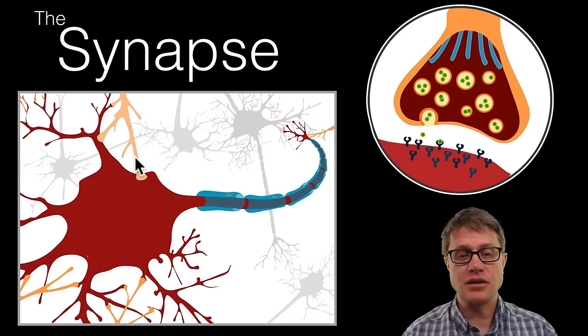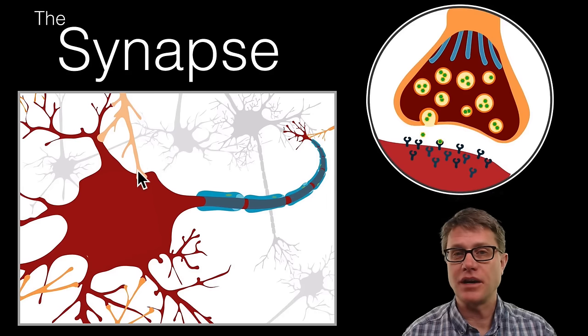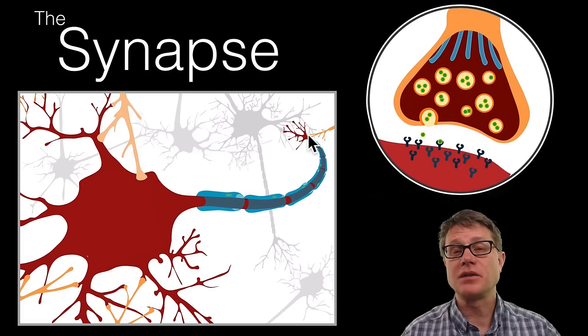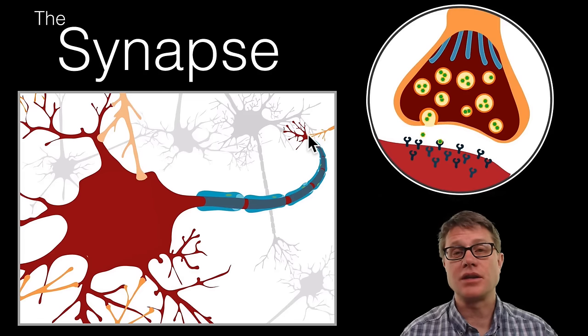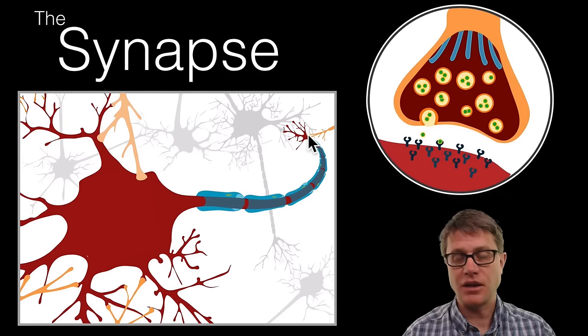But if we look at this neuron here and this neuron, the information has to get from this axon to this cell body or to this dendrite and then the same thing down here. We use synapses to do that. We are mostly going to be talking about chemical synapses in this video.